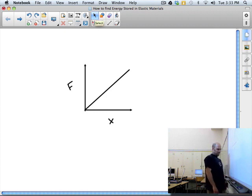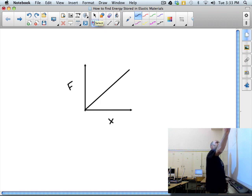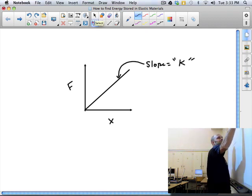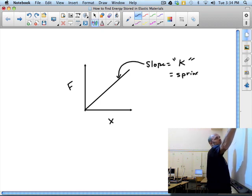You should recall that from the spring lab, the slope of this line we've been calling K. That stands for spring constant. It's got a very sophisticated name, spring constant.